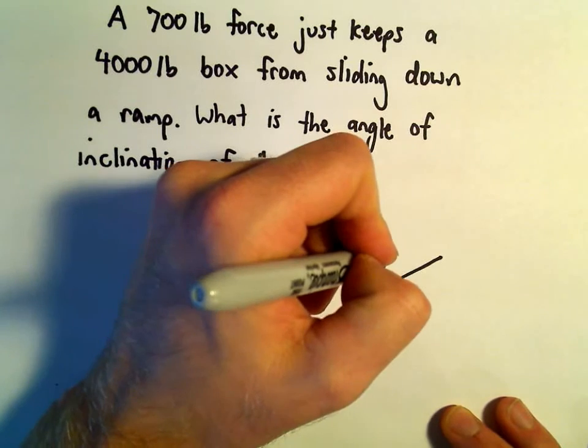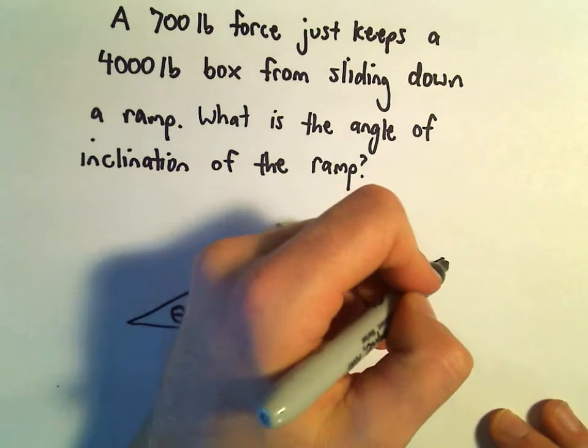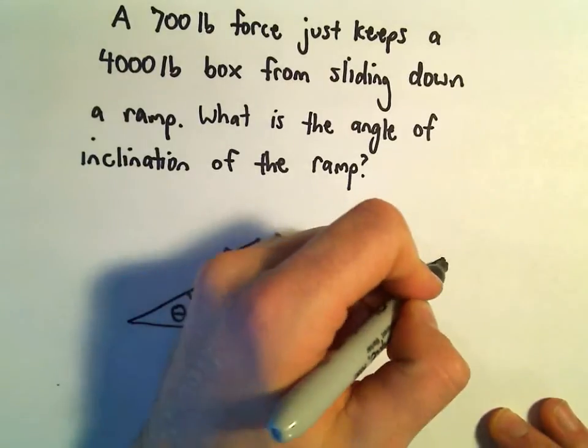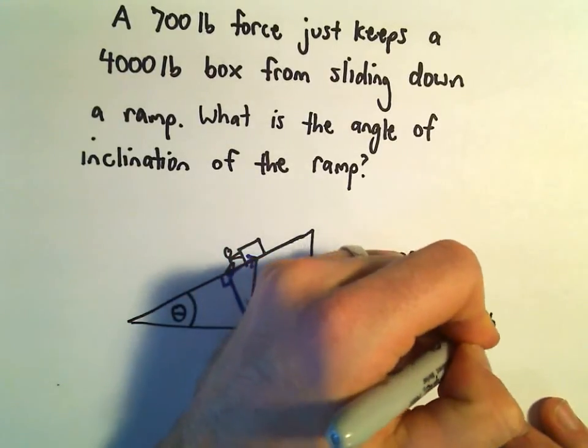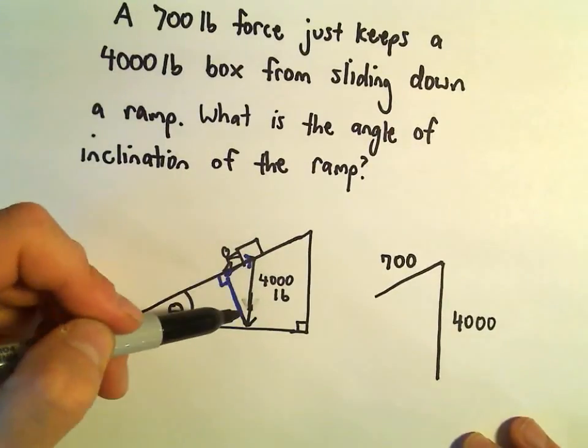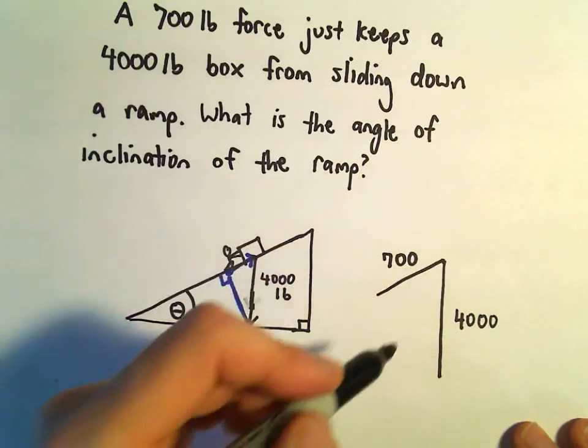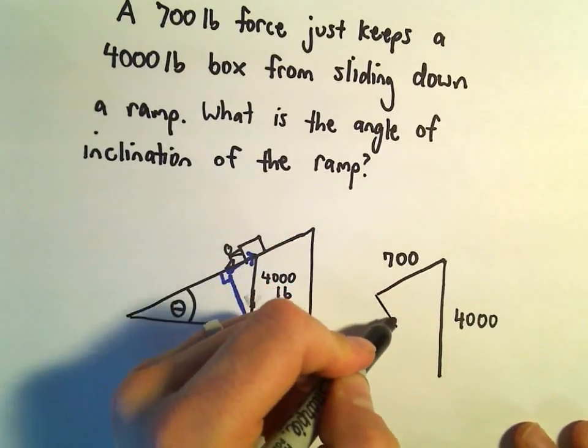A force is a magnitude or a length - we can think about that as being a length. We've got this 4,000 pound box that's creating this vector pointing straight down. So we'll have a vector with a length of 4,000.